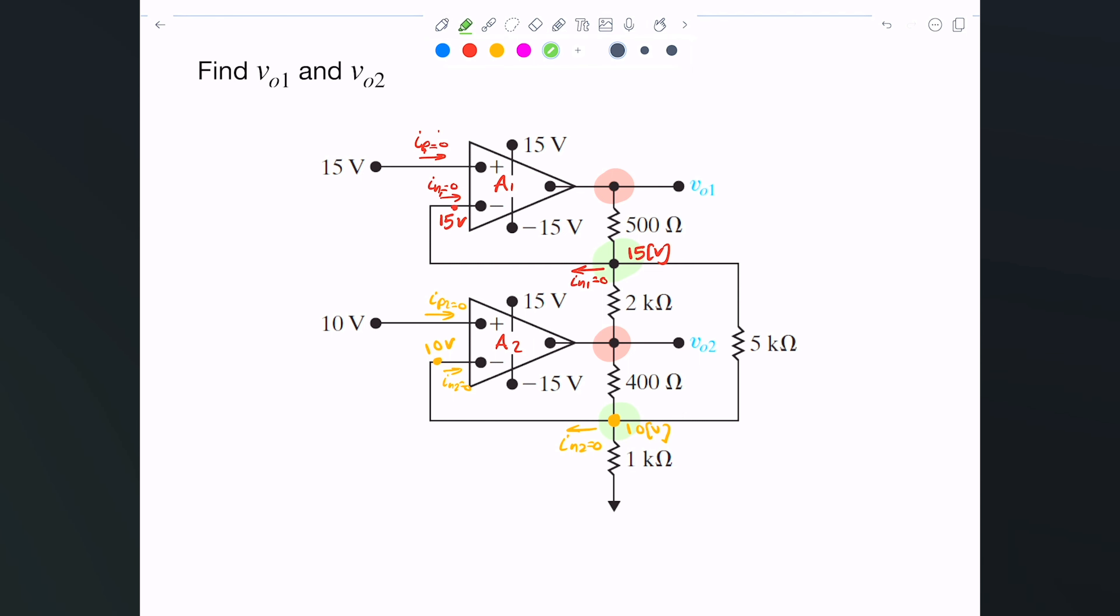So I'll just write nodal equations. In this case, hopefully you have seen that this nodal equation will include V naught here, and this nodal equation will include this V naught here. Let me call this A and I'll call this B. This is point A and this is point B.